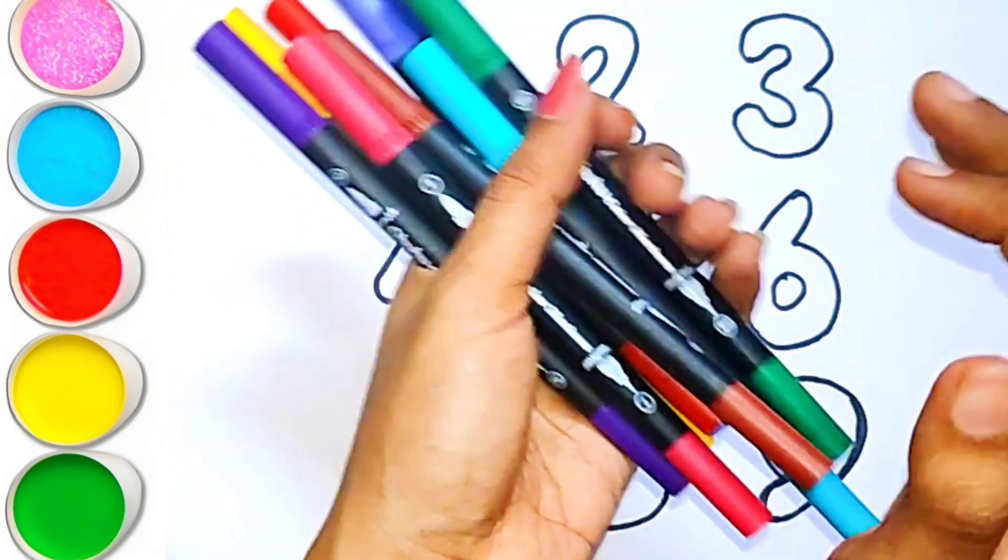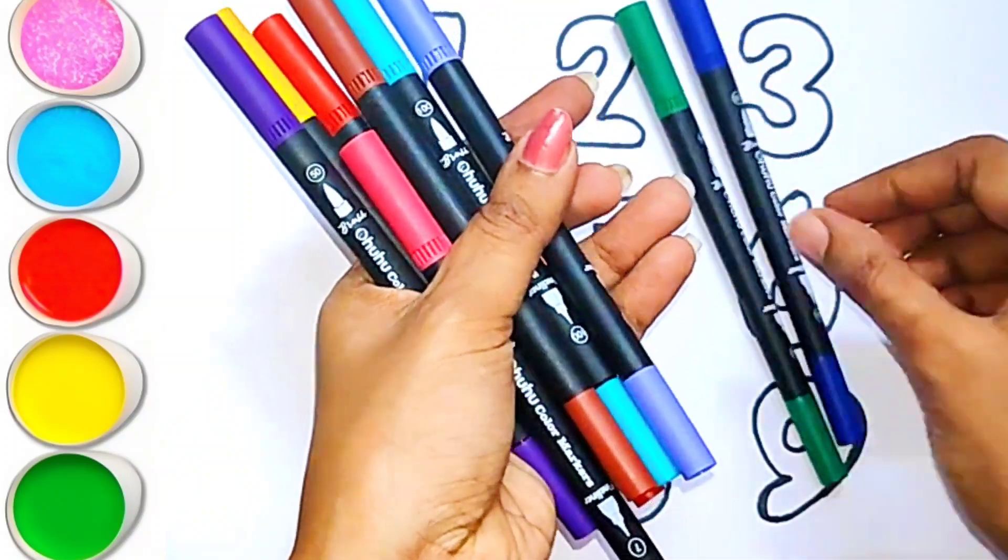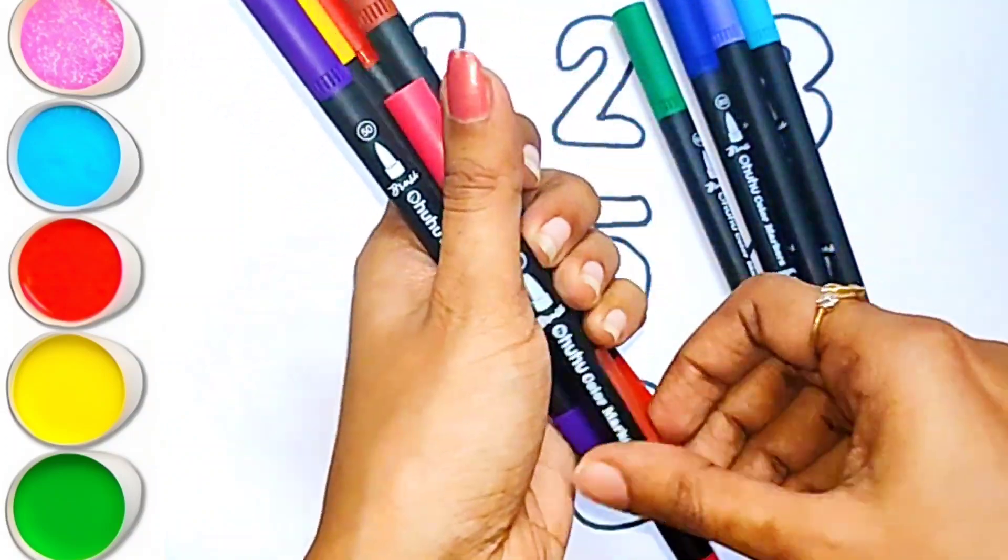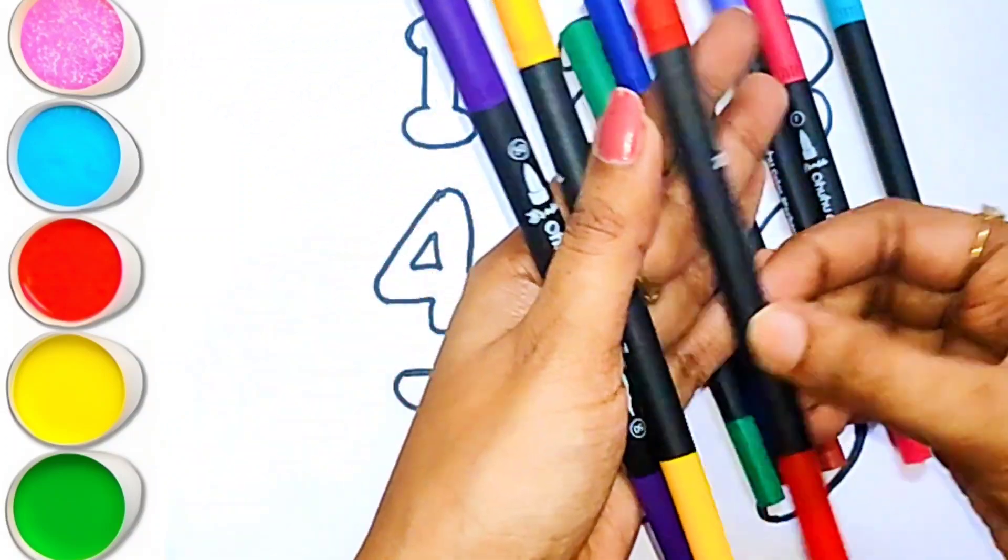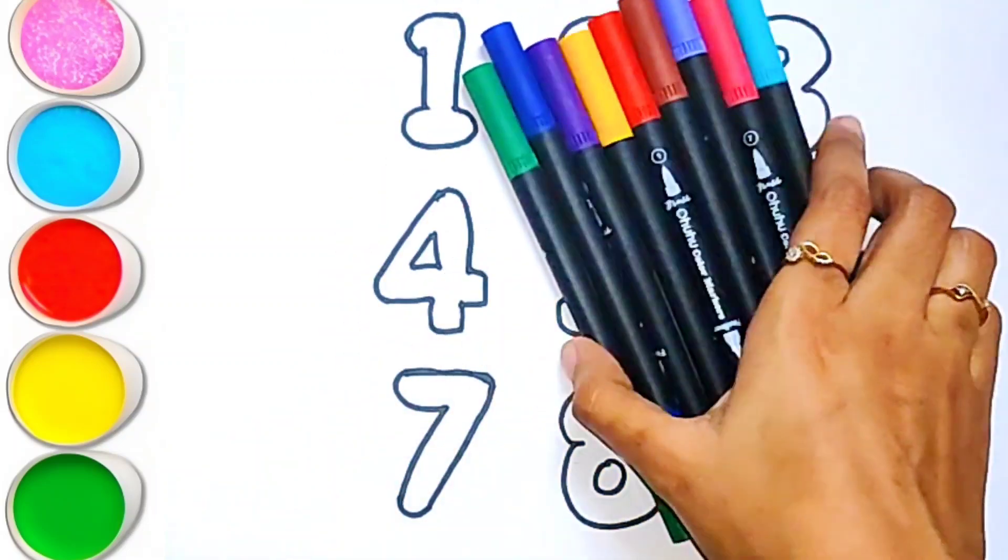Let's learn some colours. This is dark green colour, dark blue colour, purple colour, light blue colour, pink colour, brown colour, red colour, yellow colour, and wild colour.